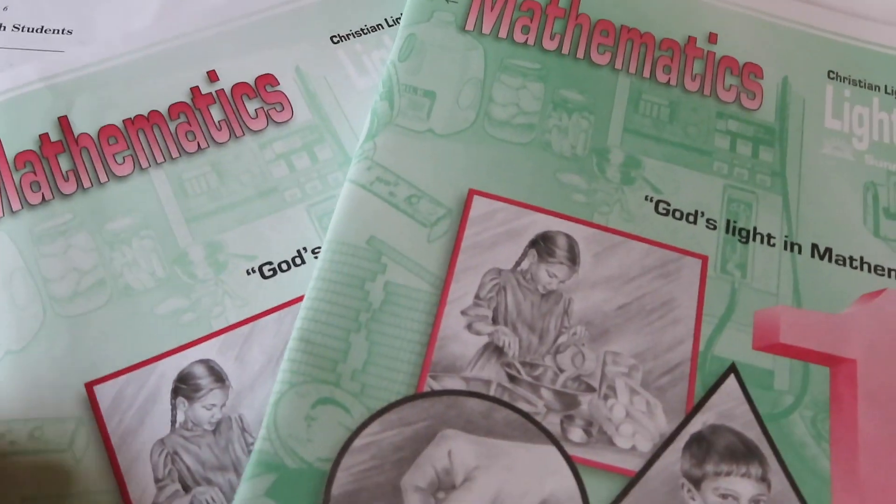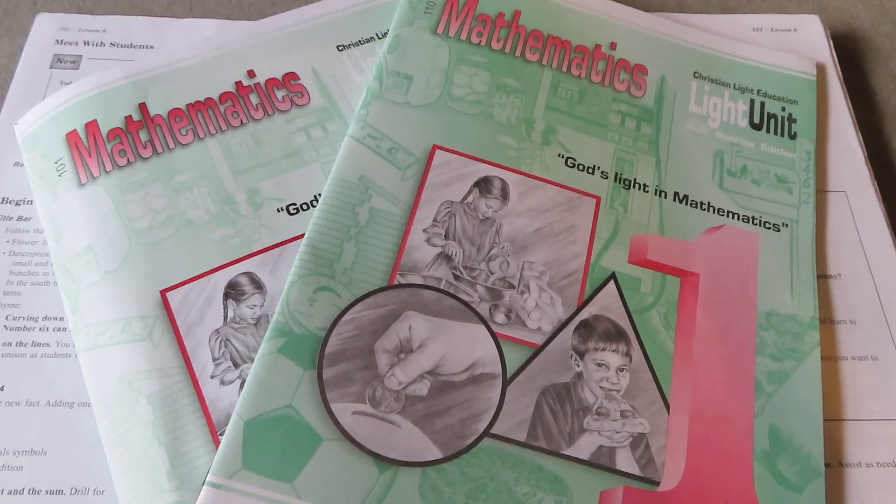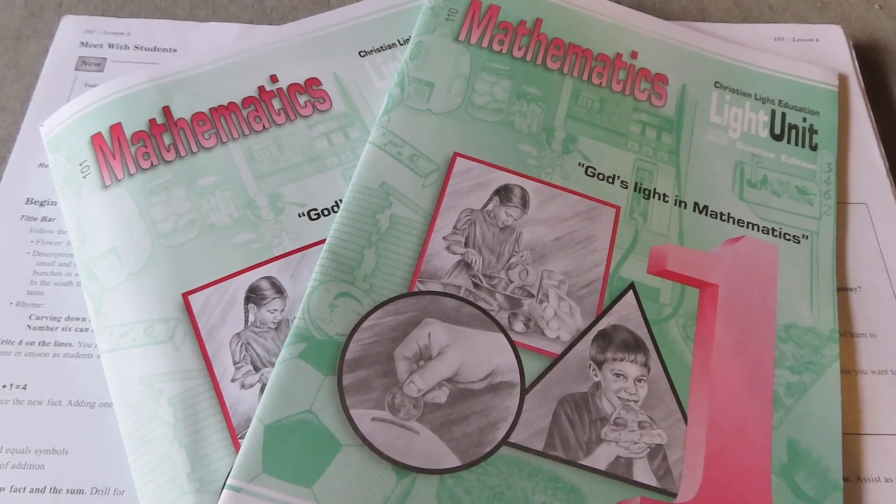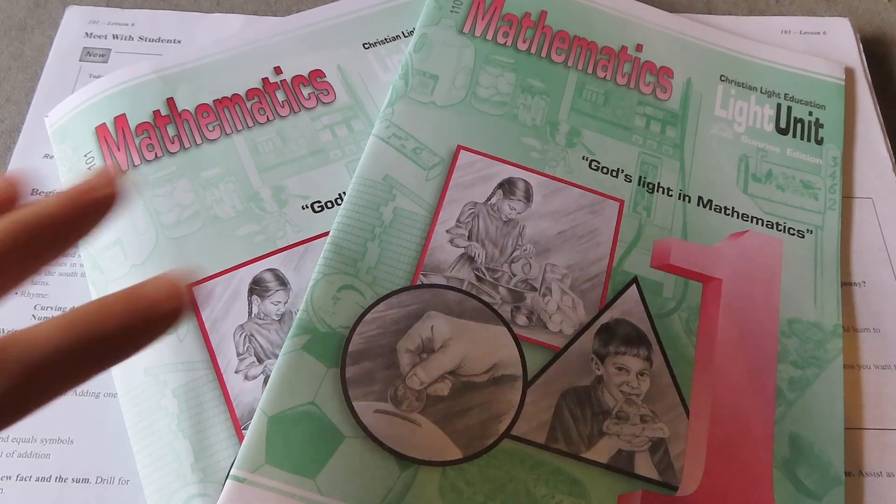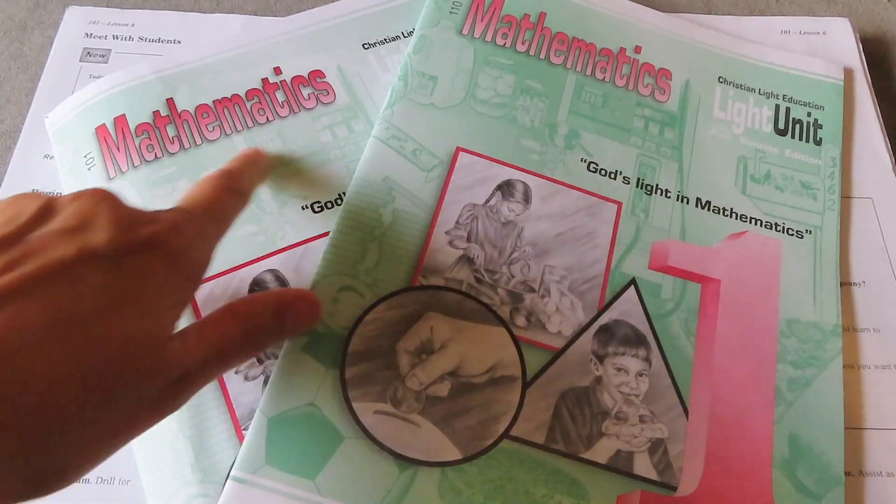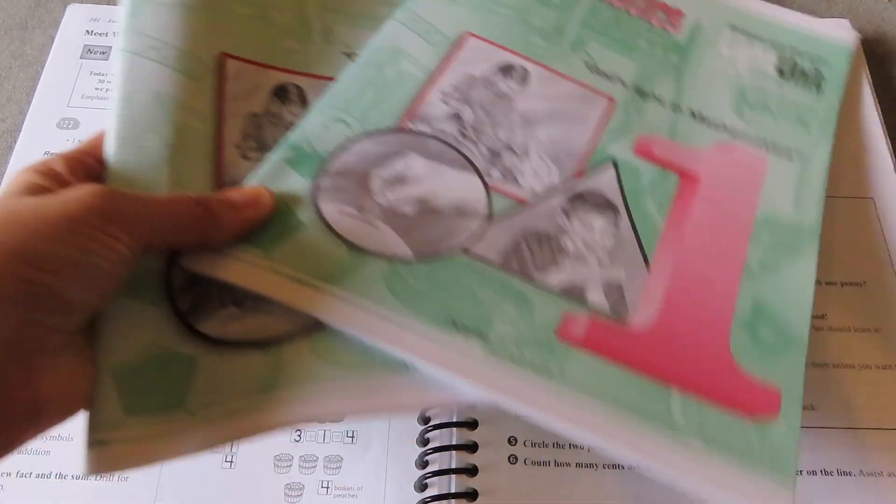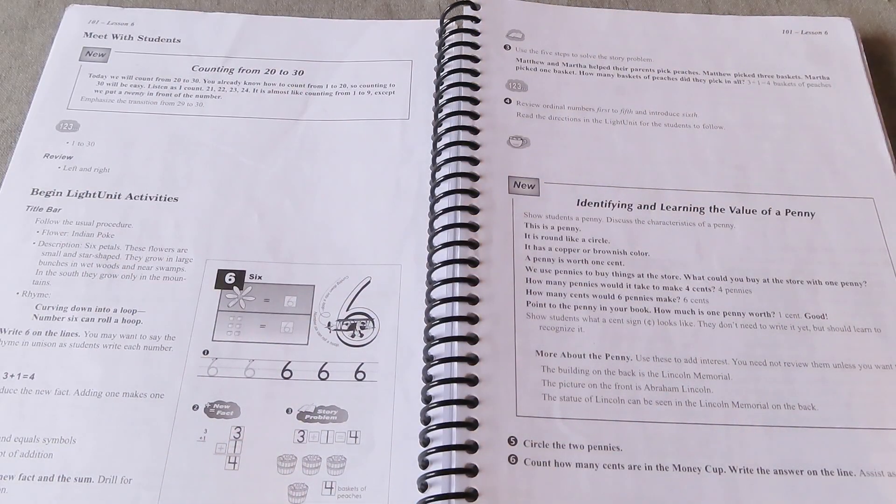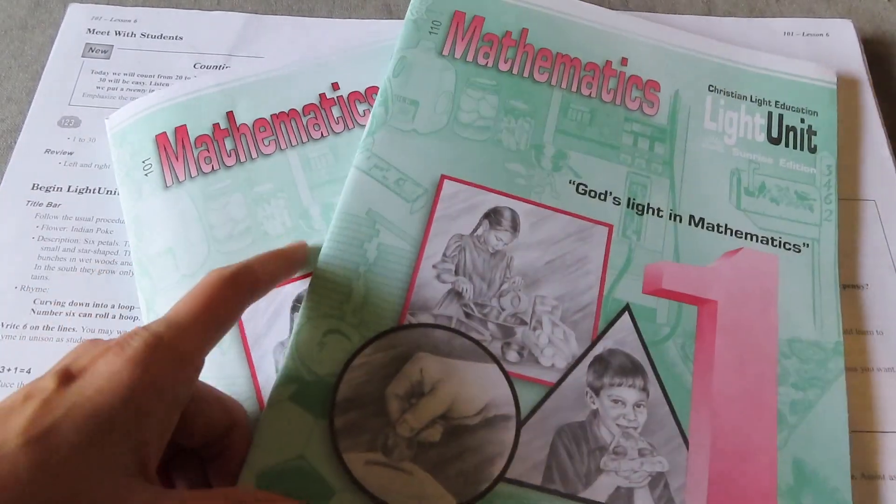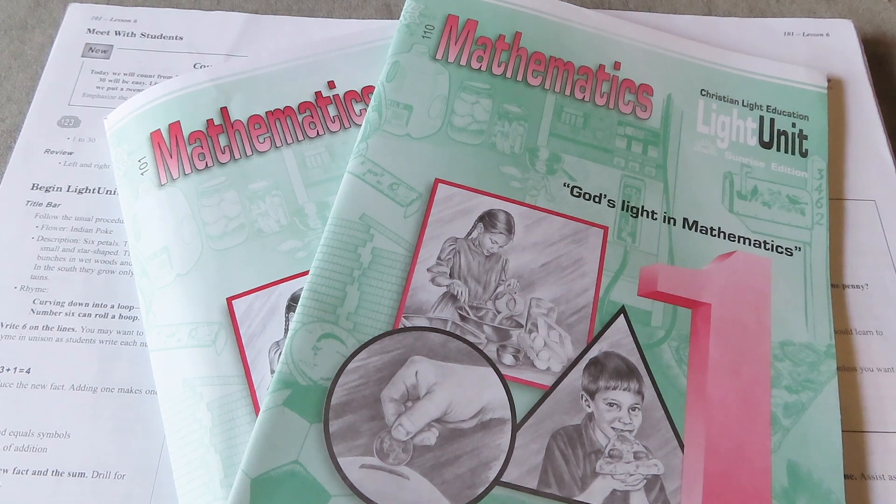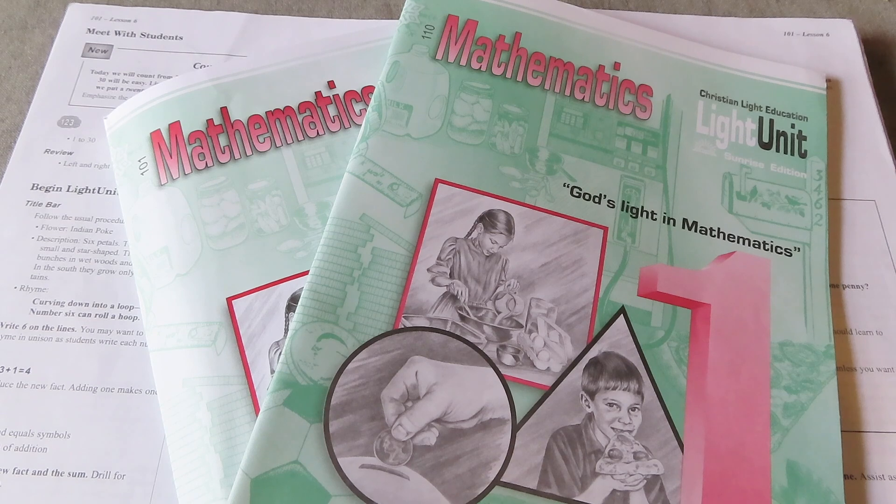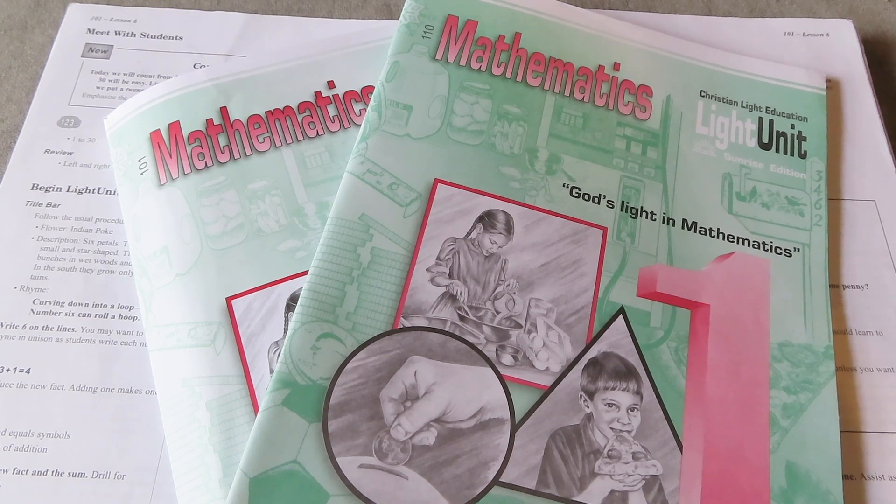So that is Christian Light Publications, Christian Light Education, whatever you want to call it, math. I hope that this was helpful for you guys. If you have any questions put them down in the comments below. It is a very affordable curriculum. This is consumable which can kind of be a downside, but most math curriculums at this level are consumable. However it could be used between multiple kids and a lot of times you can find the teacher books used. Make sure that you push that subscribe button and I will see you guys on future videos.